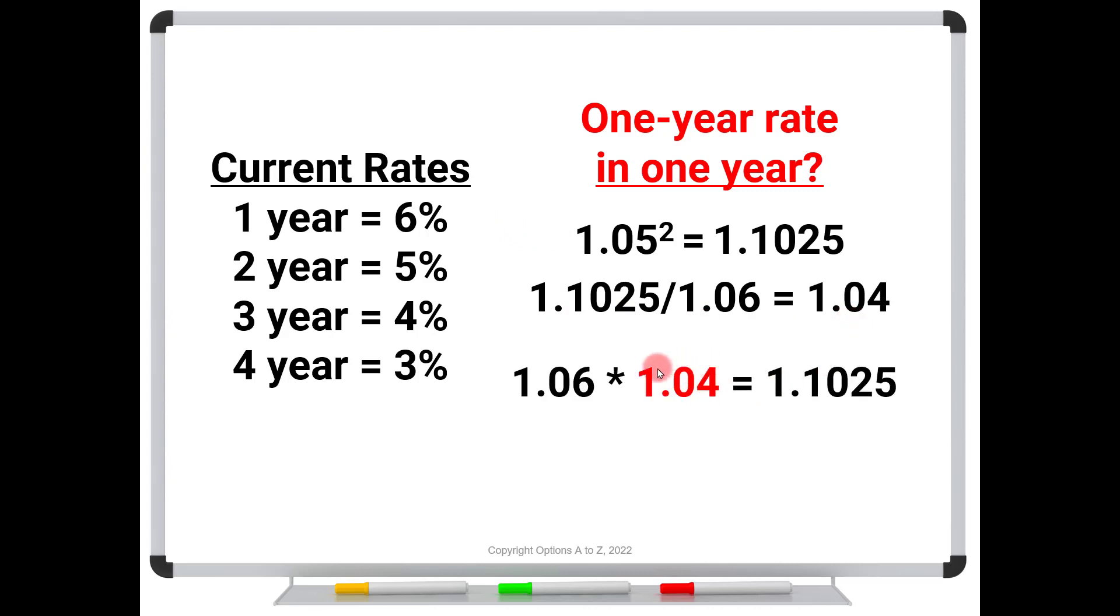And what that's telling me is that the implied rate in one year, the one-year rate in one year, is 4%. So again, here's the logic behind it. If I take the 6% rate at my bank, I let it mature, I take that money, and I renew at the expected 4% rate, I end up with 1.1025, exactly the same as if I had taken the two-year rate. So even though 4% isn't shown here as a one-year future rate, we are just simply inferring that from the current list of rates.